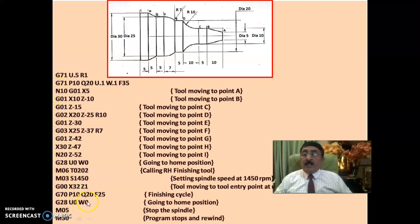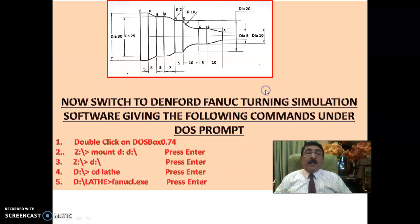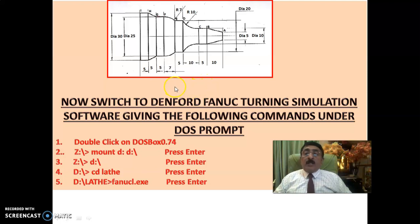Finish turning is done between block numbers N10 and N20. The tool then goes to the home position, M05 stops the spindle, the program stops and rewinds. That completes the manual part programming. Now we will switch over to the Denford Fanuc turning simulation software.